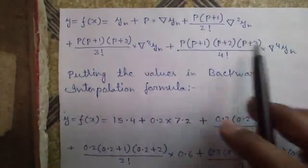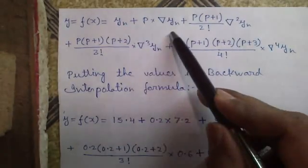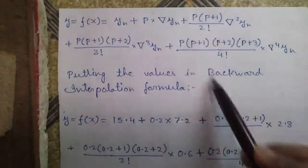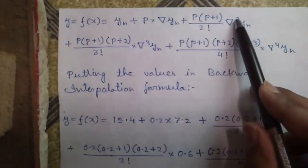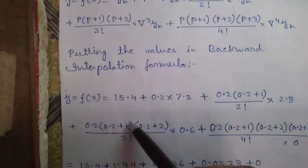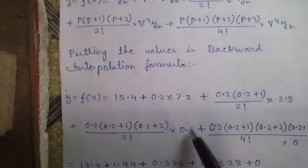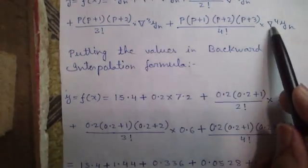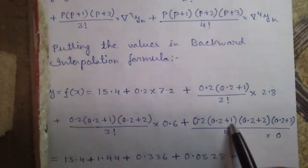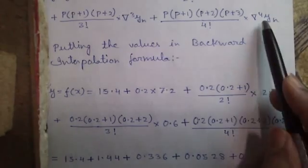Now, putting our values into the backward interpolation formula: this is y_n, then p·∇y_n, then [p(p+1)/2!]·∇²y_n, then [p(p+1)(p+2)/3!]·∇³y_n, and also [p(p+1)(p+2)(p+3)/4!]·∇⁴y_n — but ∇⁴y_n is 0.